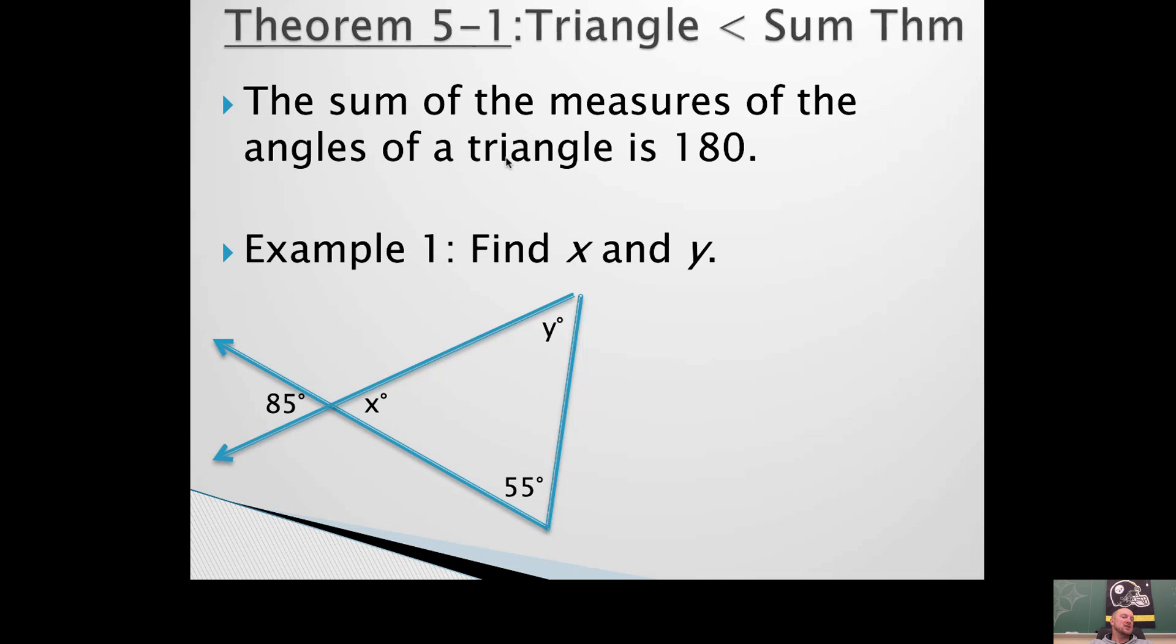So we already talked about that last section, but now we have something to call it. It's the triangle angle sum theorem. The angles of a triangle sum to 180. So use that information. How are you going to find the values of x and y?